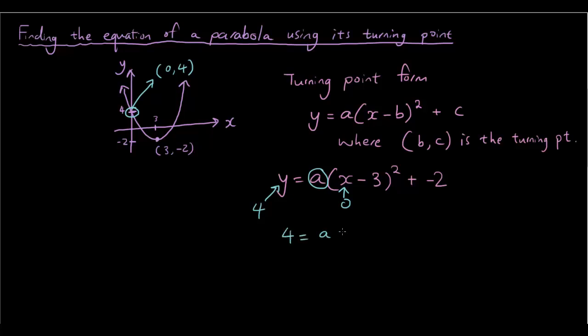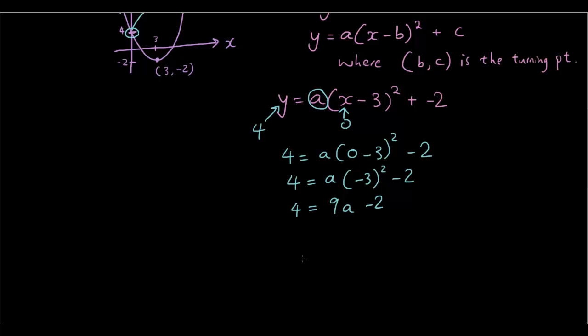4 equals a bracket 0 minus 3 squared minus 2. So we have 4 equals negative 3 times negative 3 is 9a minus 2. Rearranging the equation we have 9a equals 4 plus 2 which is 6.